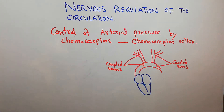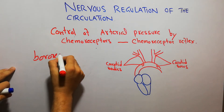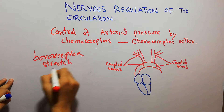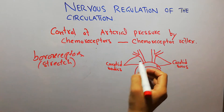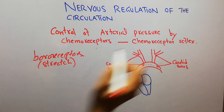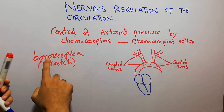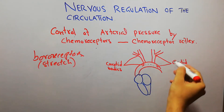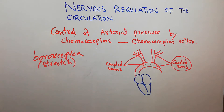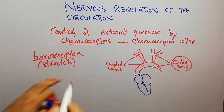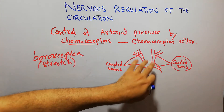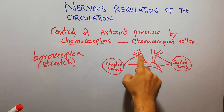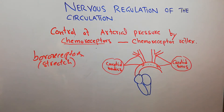Just like the baroreceptors, which we have discussed previously and which are basically stretch receptors, the chemoreceptors are also present in the aorta and at the bifurcation of the carotids. The baroreceptors were present in the aortic arch and in the carotid sinus, while chemoreceptors are present at the same locations — in the aorta and at the bifurcation of the carotid arteries — in structures called carotid bodies.